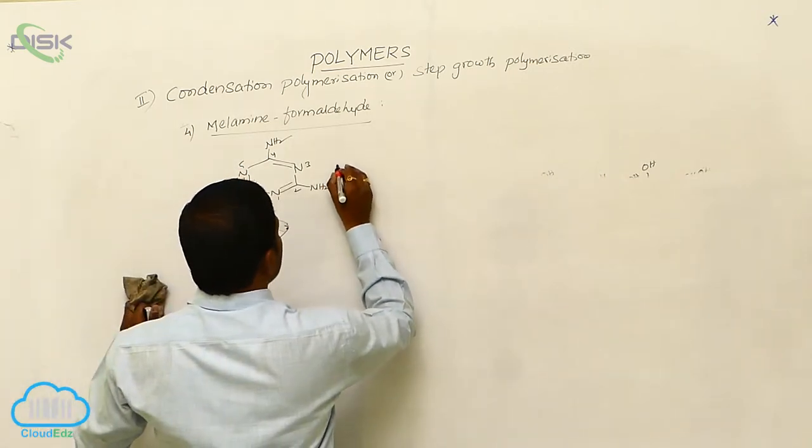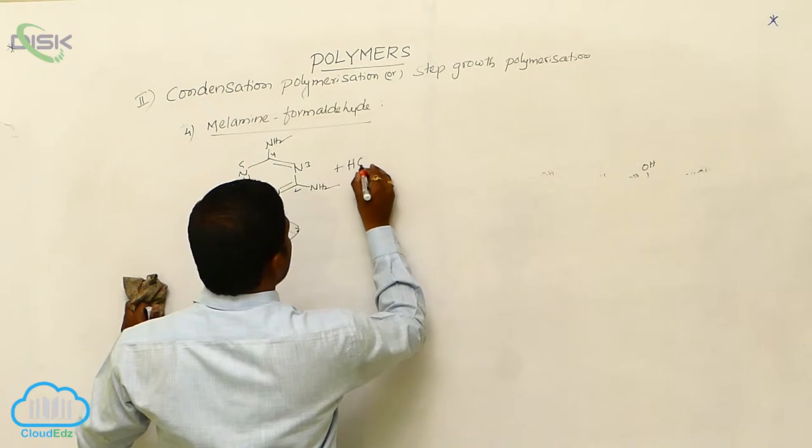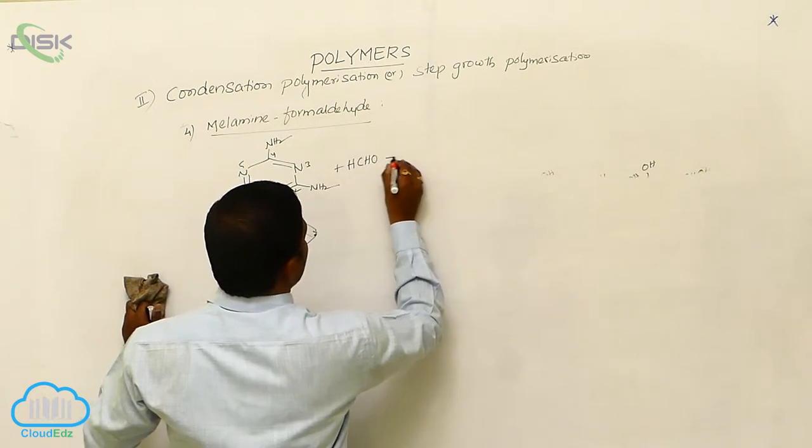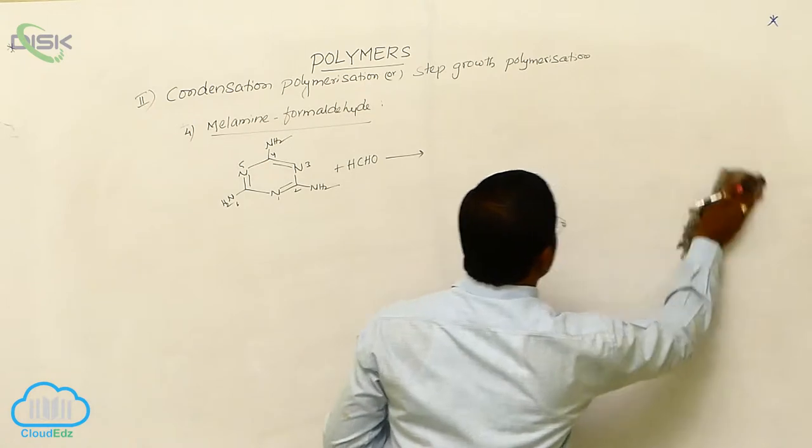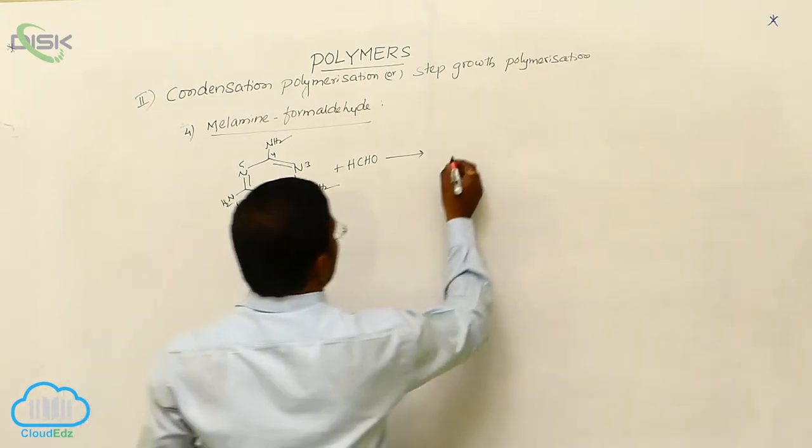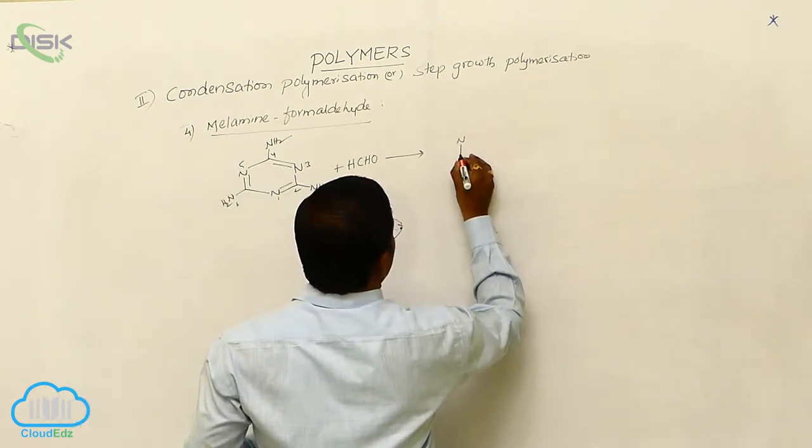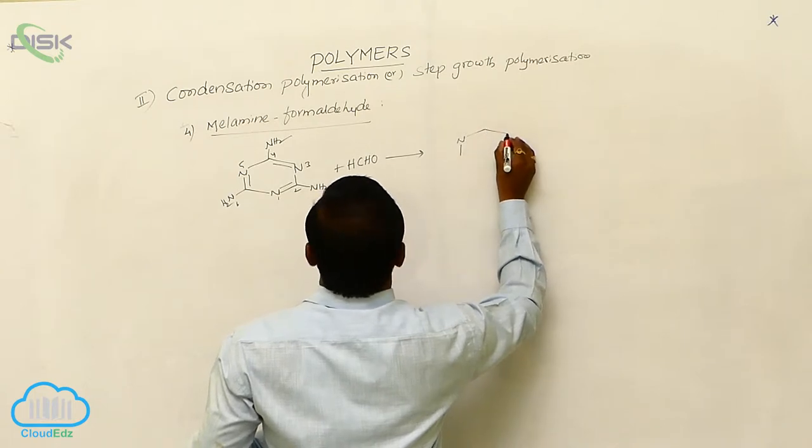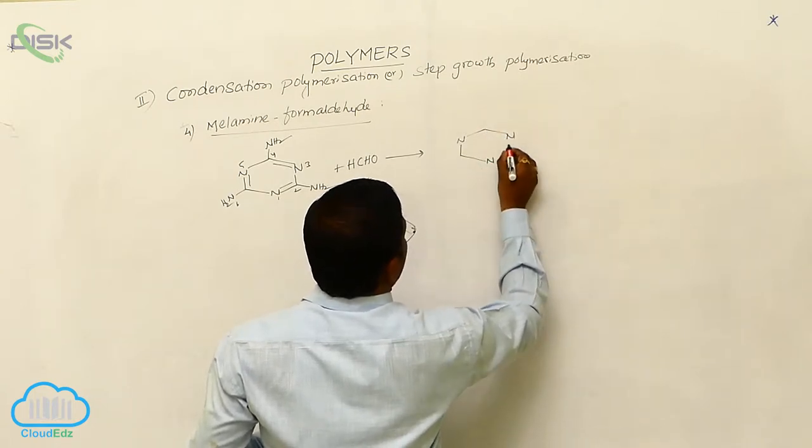When these react with formaldehyde, CH2O, they produce N, N, N species.